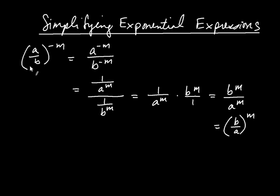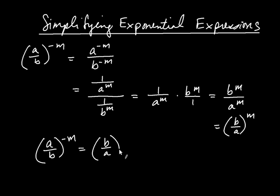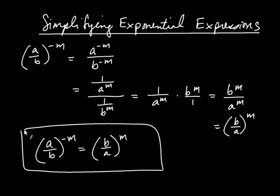So we've shown that a over b to the negative m is equal to b over a to the positive m. What that means — and we're going to be using this quite a bit — is that whenever you have a negative exponent and the base is a fraction, you can make the exponent positive as long as you take the reciprocal of the base. Whenever you have a negative exponent, you can make it positive by simply taking the reciprocal of the base.